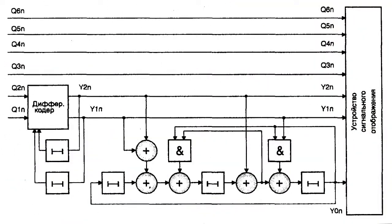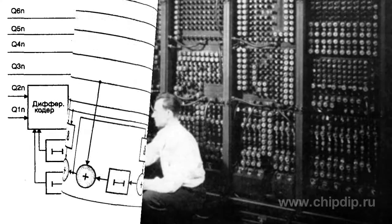As you know, in serial communication, data is transferred sequentially, one at a time. But is it possible to transmit a word not sequentially, but simultaneously along several channels?